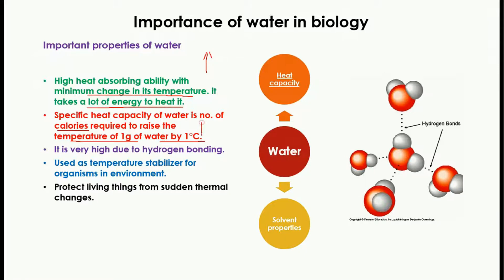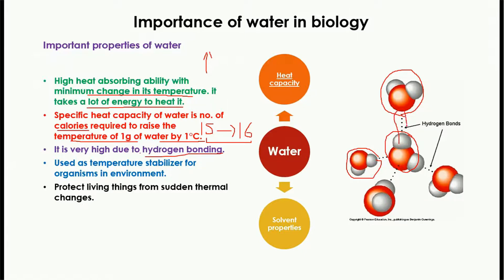For example, if water is at 15 degrees and you want it to reach 16 degrees, you have to provide a large amount of energy. This is because water molecules stick together through hydrogen bonding — the force of cohesion. This hydrogen bond is very difficult to break and requires a high amount of energy, which is why the specific heat capacity of water is very high.